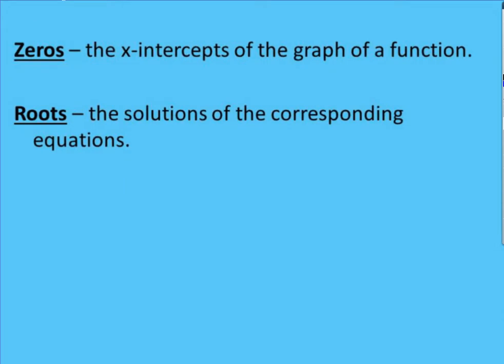The zeros of a function are just the x intercepts on the graph of the function. The roots are the solutions to the equation. So they're the exact same thing, but when we're talking about a graph, we're talking about the zeros. When you're talking about the solutions for x on an equation, we're talking about the roots.